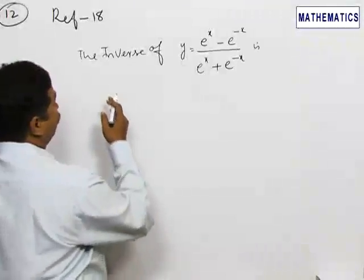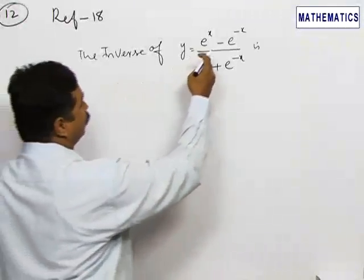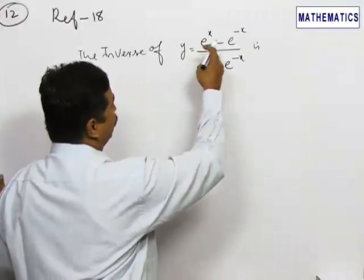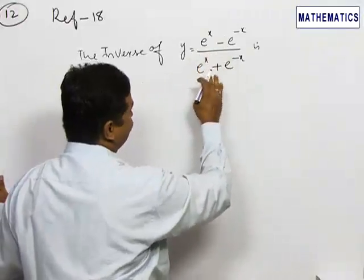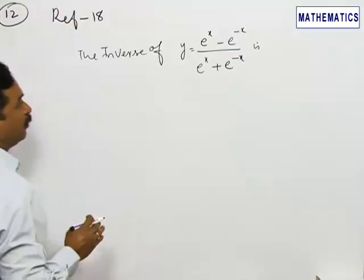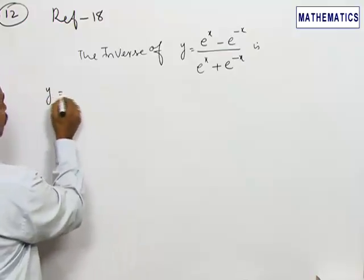Let us refer to question number 18. We have to find the inverse of y equals (e^x minus e^(-x))/(e^x plus e^(-x)). That is, y equals (e^x minus 1/e^x) divided by (e^x plus 1/e^x).